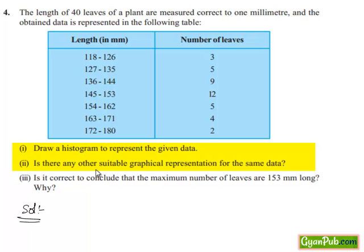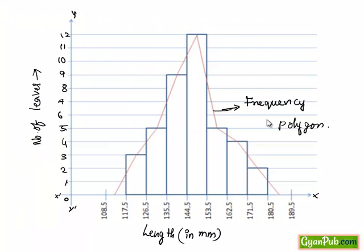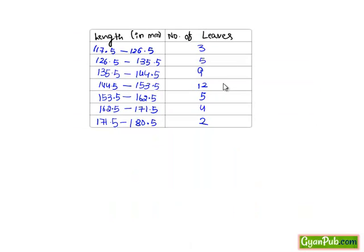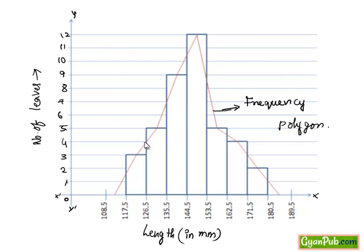The second bit. Is there any other suitable graphical representation for the same data. If we see in the tabular form, as per this we have drawn the graph. Here along with the histogram we also have frequency polygon to represent the same data. The answer is frequency polygon with which we can represent the same data.